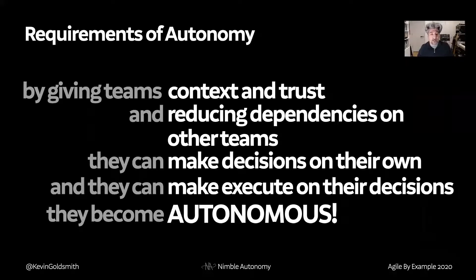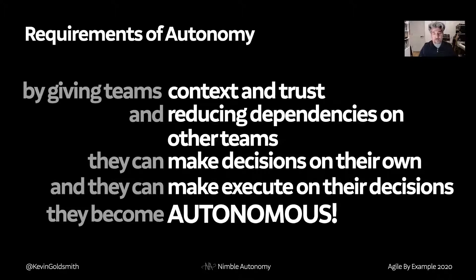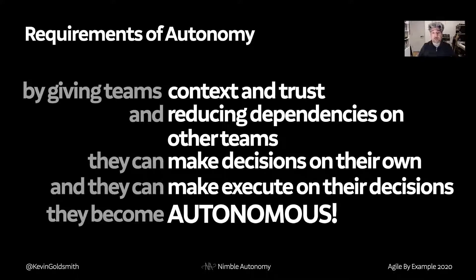You might have seen this slide before because when I talk about autonomy for teams, I tend to show this slide. These are what I would consider the requirements of autonomy. Giving teams context — context means information, giving them visibility — because the goal of autonomy is to let them make decisions, and you can't make good decisions without good information. Trust: if you can't trust the decisions the teams are making, they're not going to be autonomous because there's going to be a lot of questioning and challenging, which means you're going to slow down the team. Reducing dependencies on other teams means less coordination bottlenecks and less decision-making bottlenecks — a team can go faster. And then if these are in place, teams can make decisions on their own, execute on those decisions, and they are autonomous.